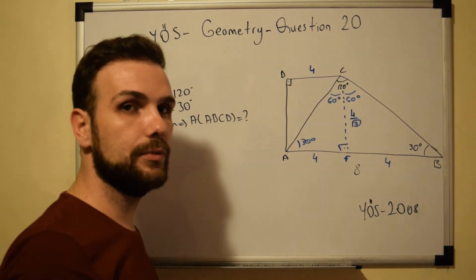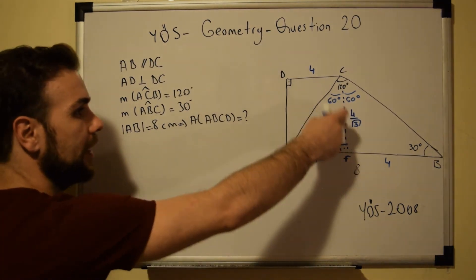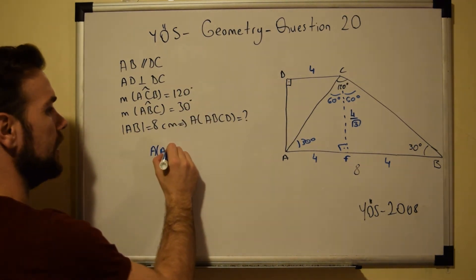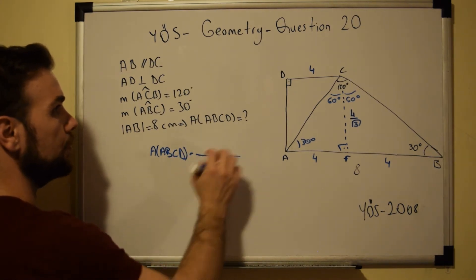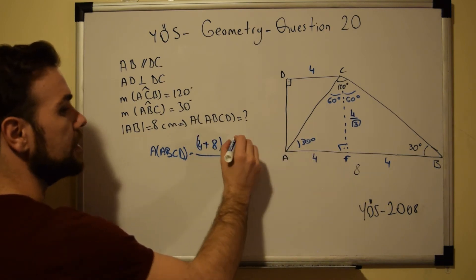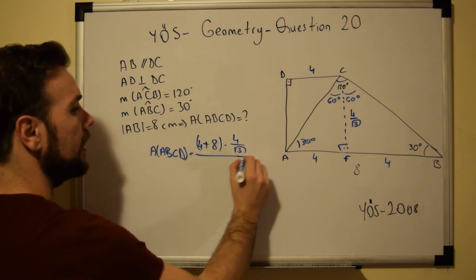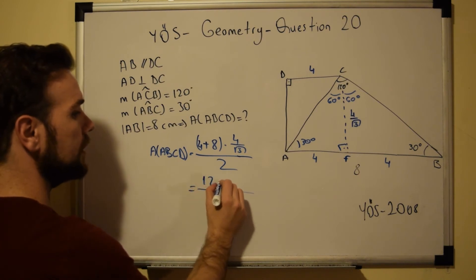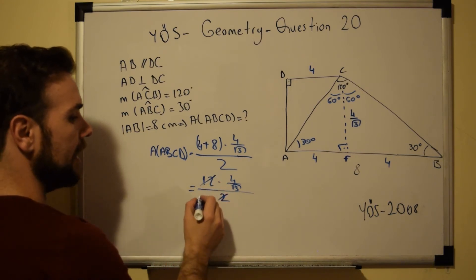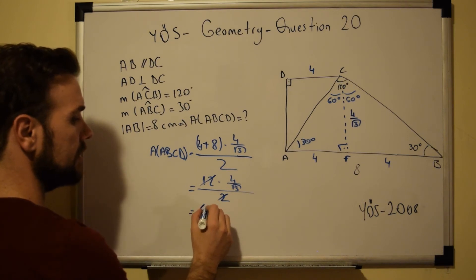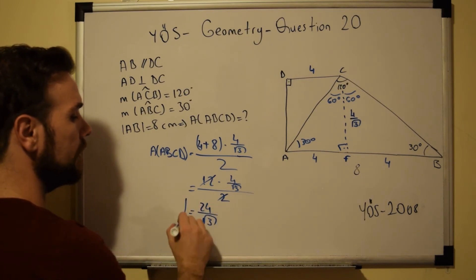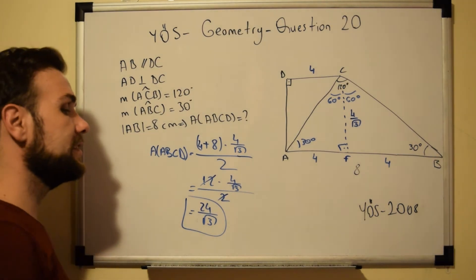Now we have every single piece of information we need to find the area of this trapezoid — the height, and the lengths of both bases. The area of trapezoid ABCD equals base 1 plus base 2 times the height, which is 4 over square root of 3, all over 2. That gives us 12 times 4 over square root of 3, over 2, which simplifies to 24 over square root of 3. This is the area of the trapezoid.